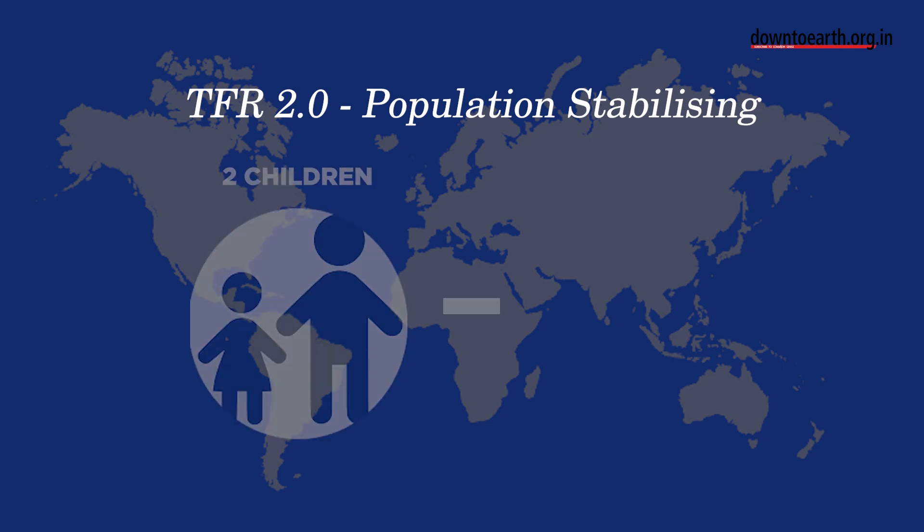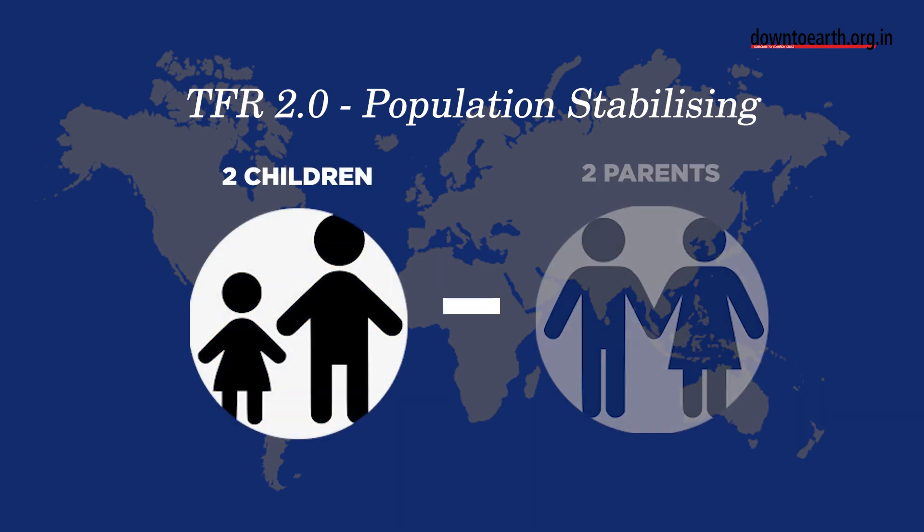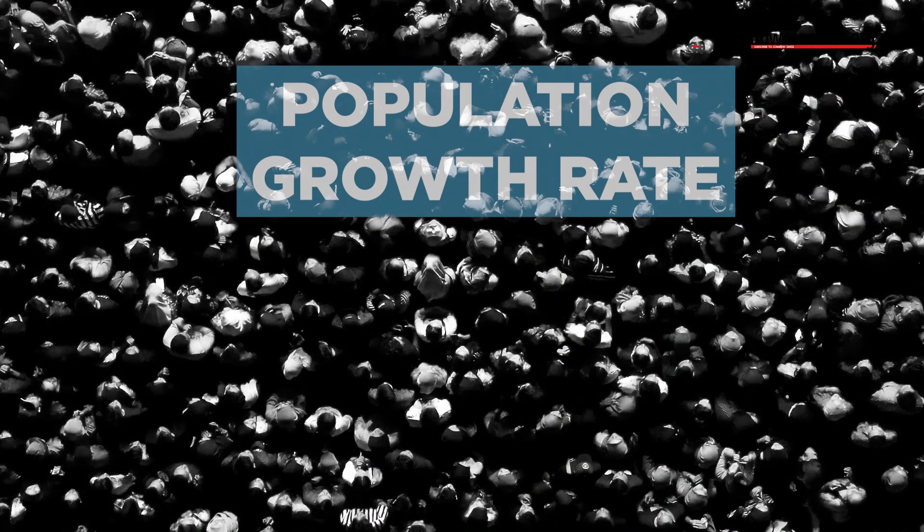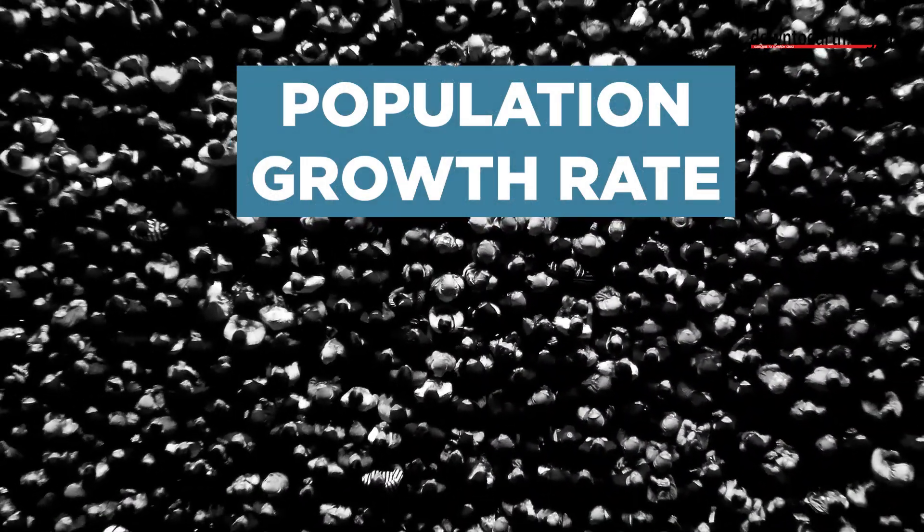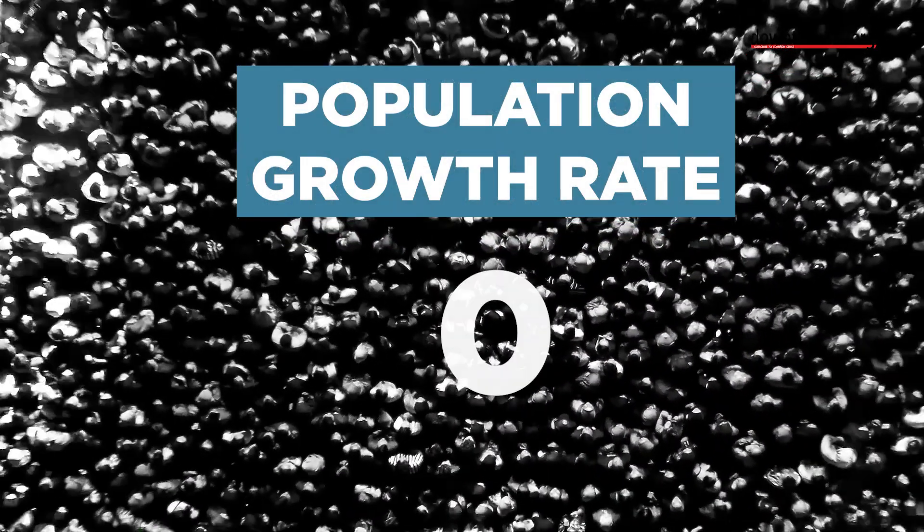A TFR of 2 indicates that the population is stabilising because there are two children to replace two parents, so the population growth rate in the long run will amount to zero. There is often a gap of a few decades between achieving replacement level fertility and population stabilisation.